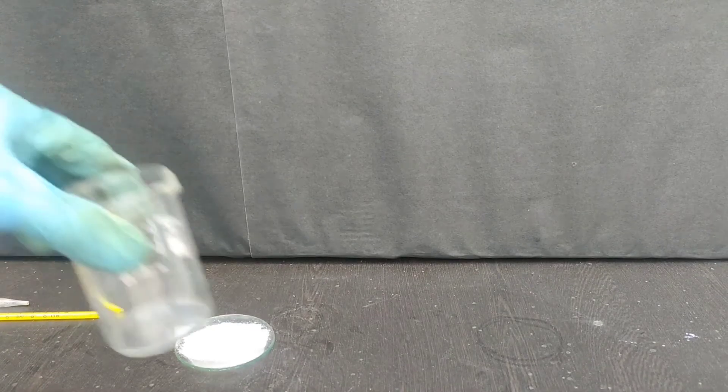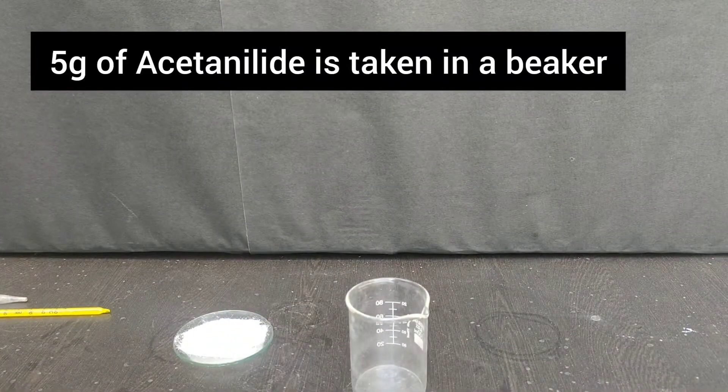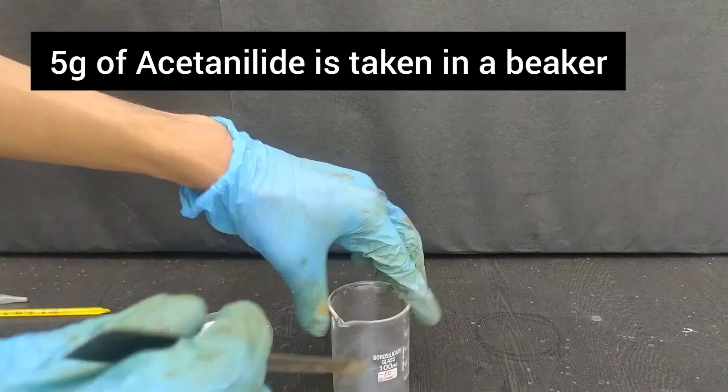First of all, we start by taking 5 grams of acetanilide into a small 100 ml beaker.